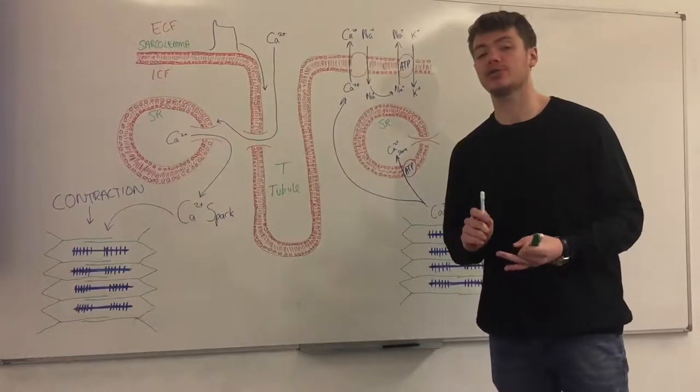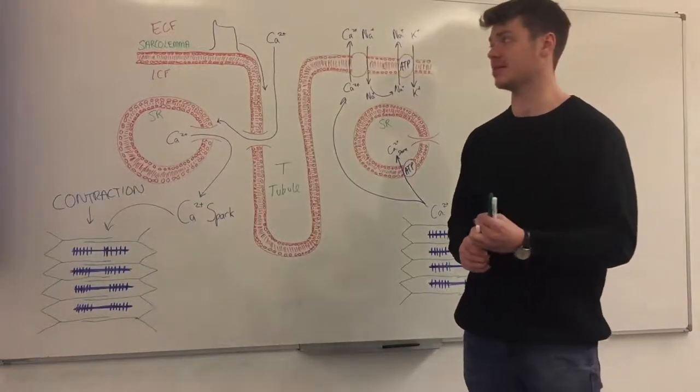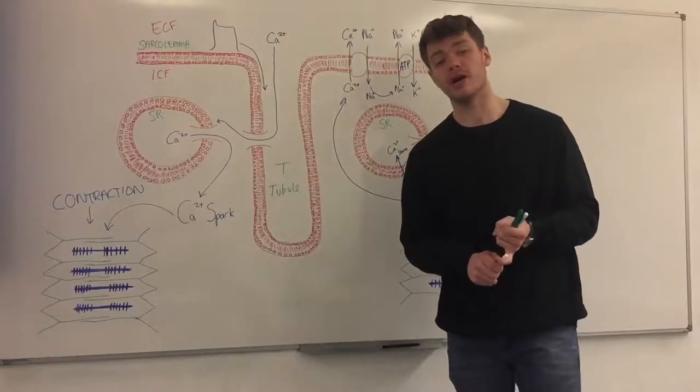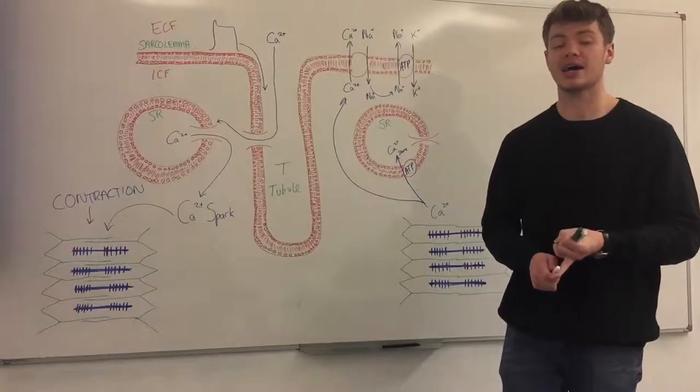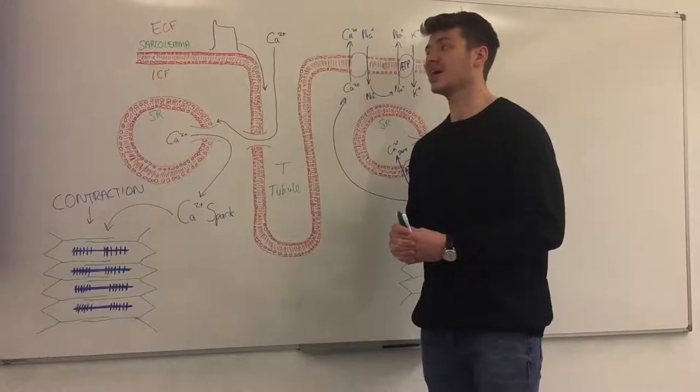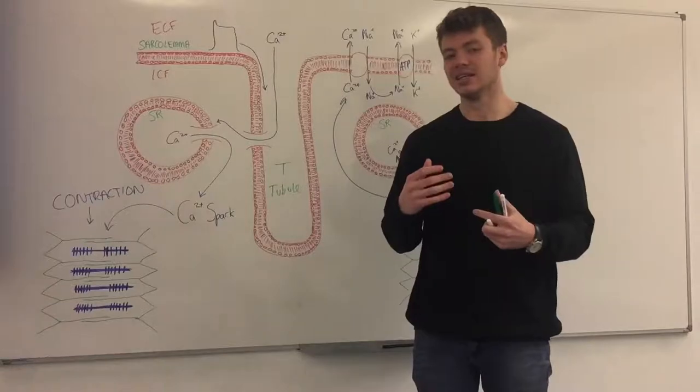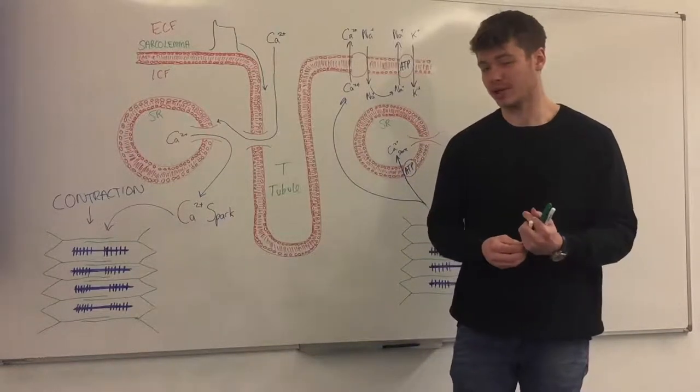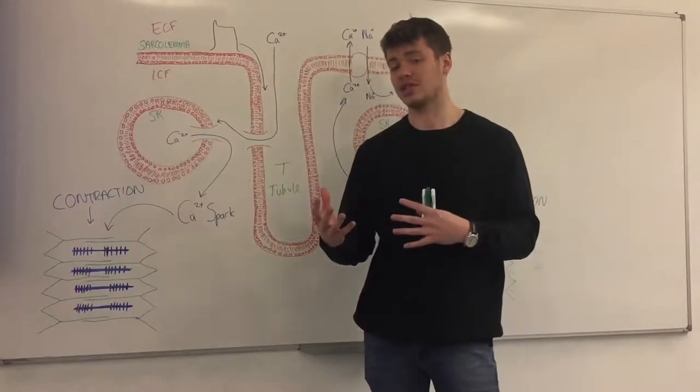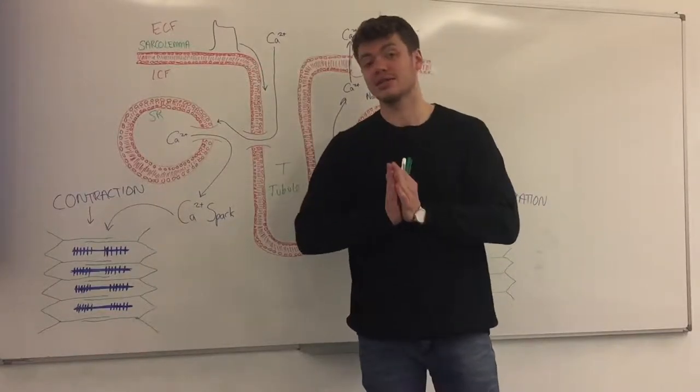Up to this point we've learned about two physiological components of the cardiovascular system. We've learned about the microstructure of the cardiomyocyte and we've learned about the cardiac action potential. Now what we're going to do is apply both of those principles into the excitation-contraction coupling system. That sounds quite complicated but it's really quite simple. What we're trying to do is link that action potential we've just learned about to the function of the heart, which is to contract like a muscle.